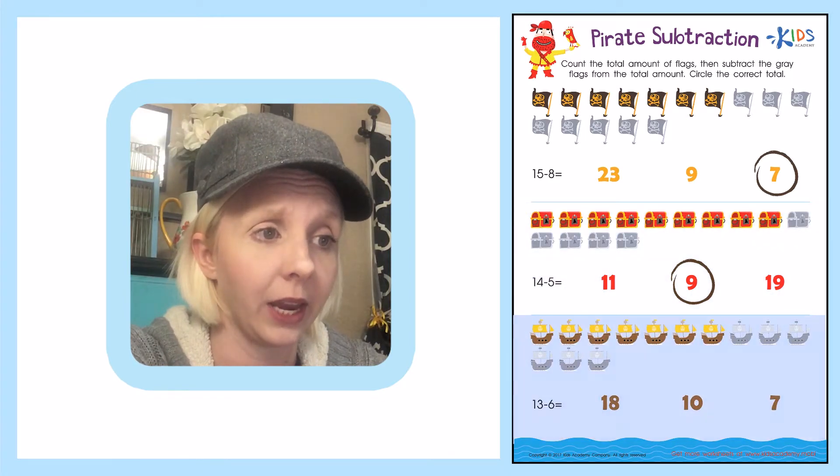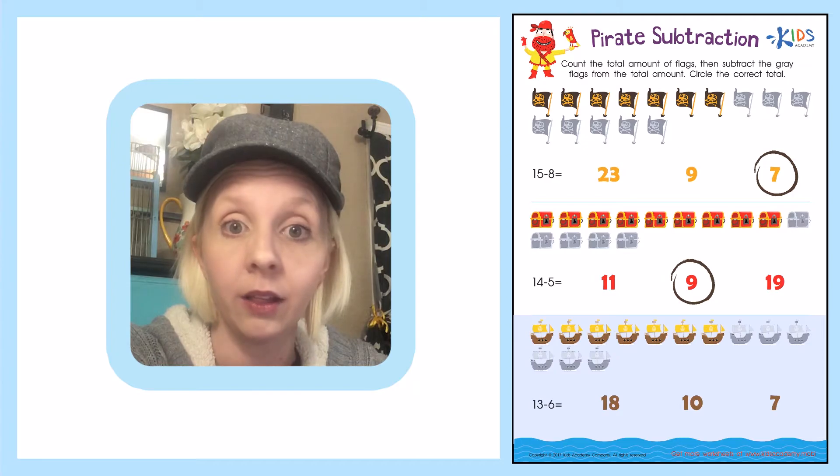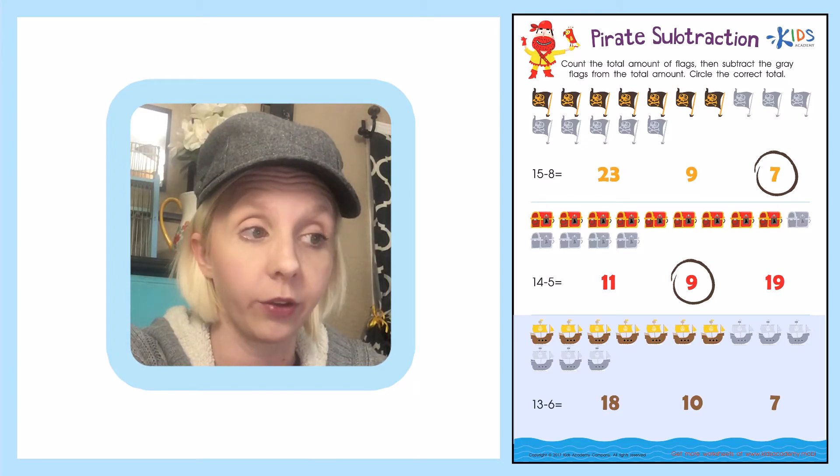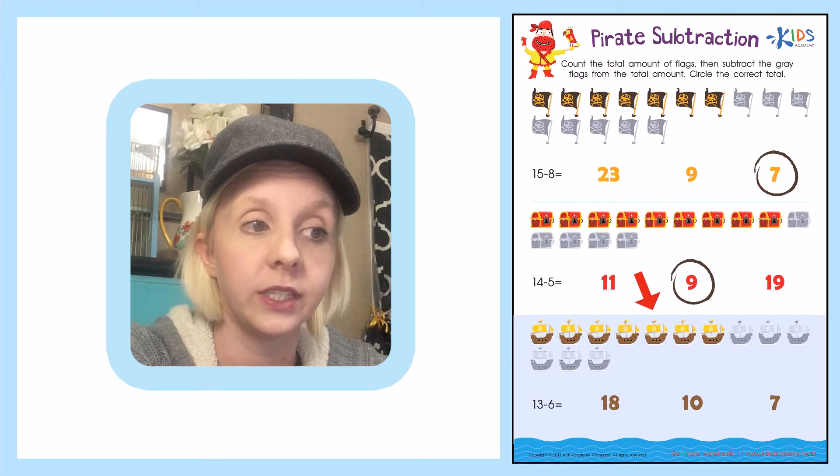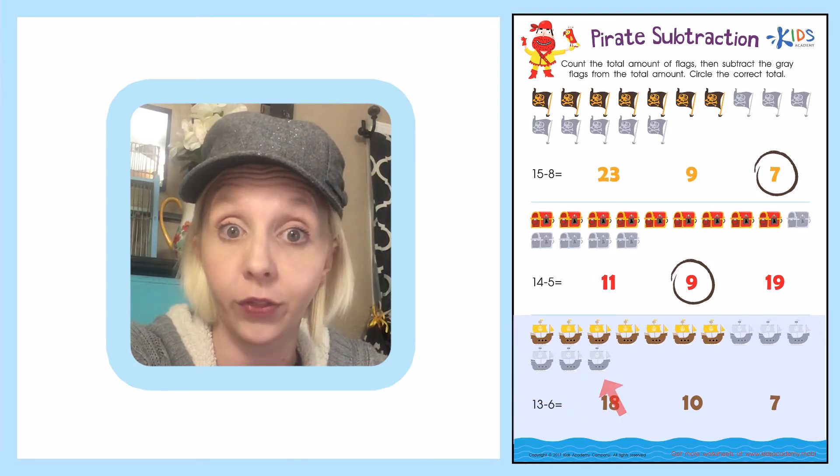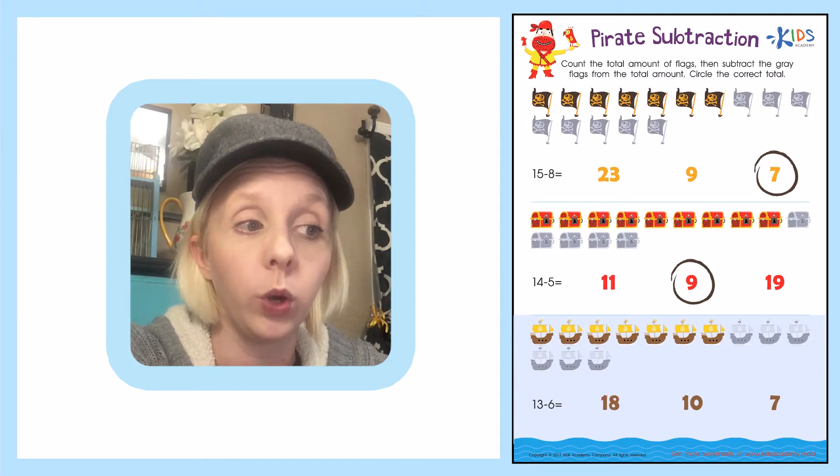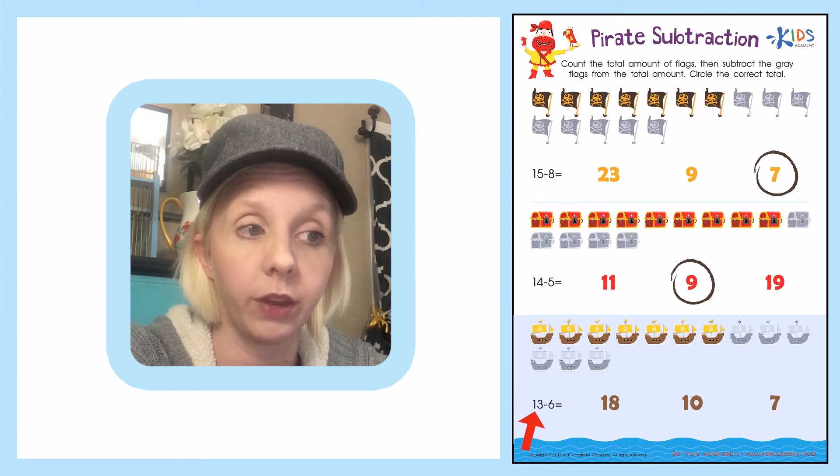The last one looks like it is pirate ships. Let's count up the total all together. 1, 2, 3, 4, 5, 6, 7, 8, 9, 10, 11, 12, 13. We have 13 total pirate ships. We want to subtract 6. So they've already grayed out 6 of them for us.